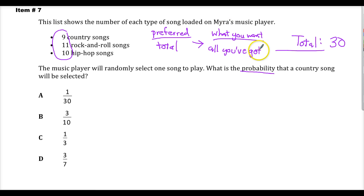What you want, all you've got. So all I've got is 30. What I want is, it's not really what I want, it's what the question wants. What you want to know about is what's the probability of a country song. So all I've got is 30. What I want, country, 9.